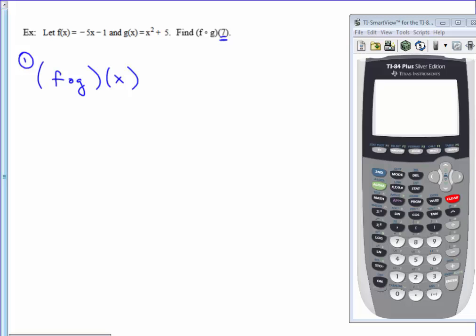So f composed of g, you start with the function f, and then in place of x, you plug in the function g. f looks like negative 5 times something minus 1. In place of the something, I will substitute in the function g.